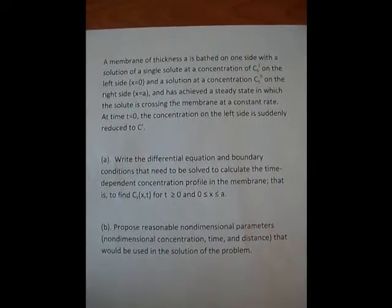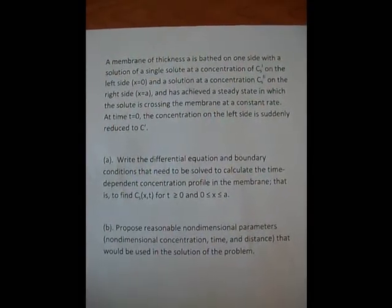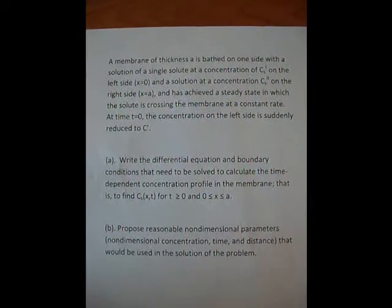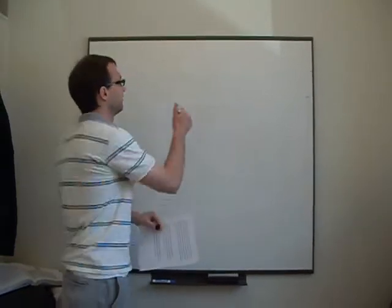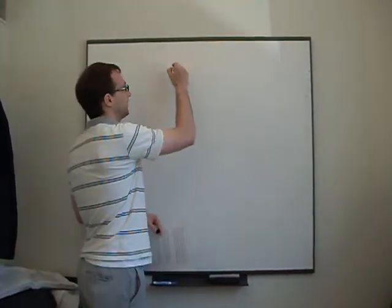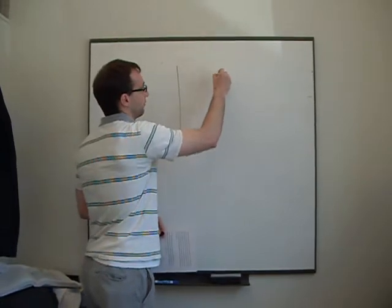So this is the problem that we're going to discuss. You can go ahead and pause it on this so it's not so shaky. So the problem reads that there's a membrane of thickness A that's based on one side of a solution. First of all, I want you to go ahead and draw out the problem every time you try to work through something.